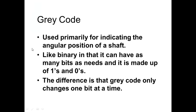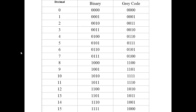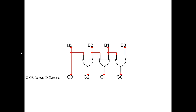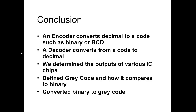Moving on to gray code — it's used for shaft position encoding, telling you where a motor shaft is positioned. It's used in robotics, though less commonly now. A gray code converter can be built from binary to gray code using exclusive-OR gates. So we've covered encoders, decoders, comparators, multiplexers, and gray code. This is the end of this lesson.